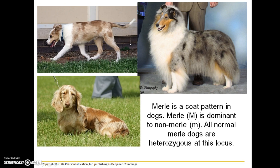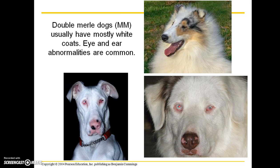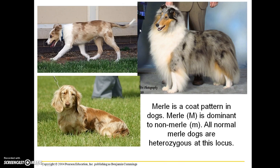Unfortunately, some kennels will actually purposefully breed a double merle dog, because when one parent has two capital M alleles, that's going to mask any other allele at that locus, and 100% of the resulting puppies will be normal merle. This concludes the chapter.